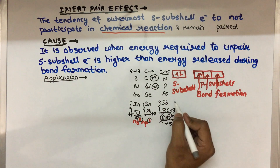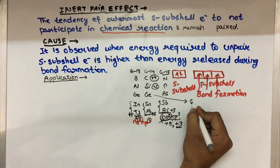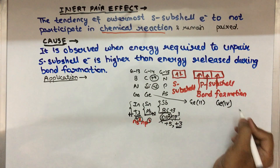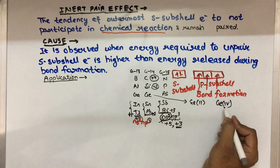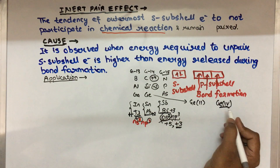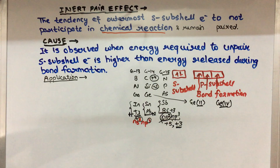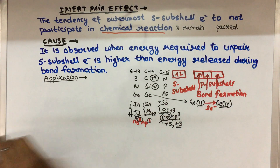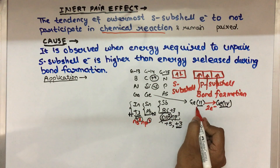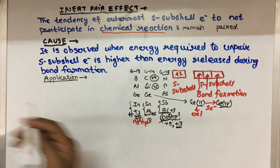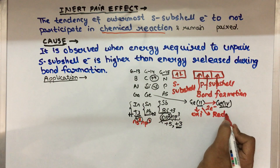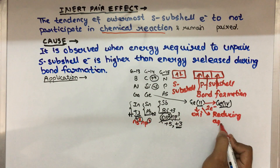Now for simple applications: for example, take germanium. Out of Ge(II) and Ge(IV), if Ge(IV) is the stable oxidation state, then Ge(II) has the tendency to convert itself into Ge(IV). It does so by losing 2 electrons — that means oxidation of germanium is taking place, and Ge(II) is acting as a reducing agent.